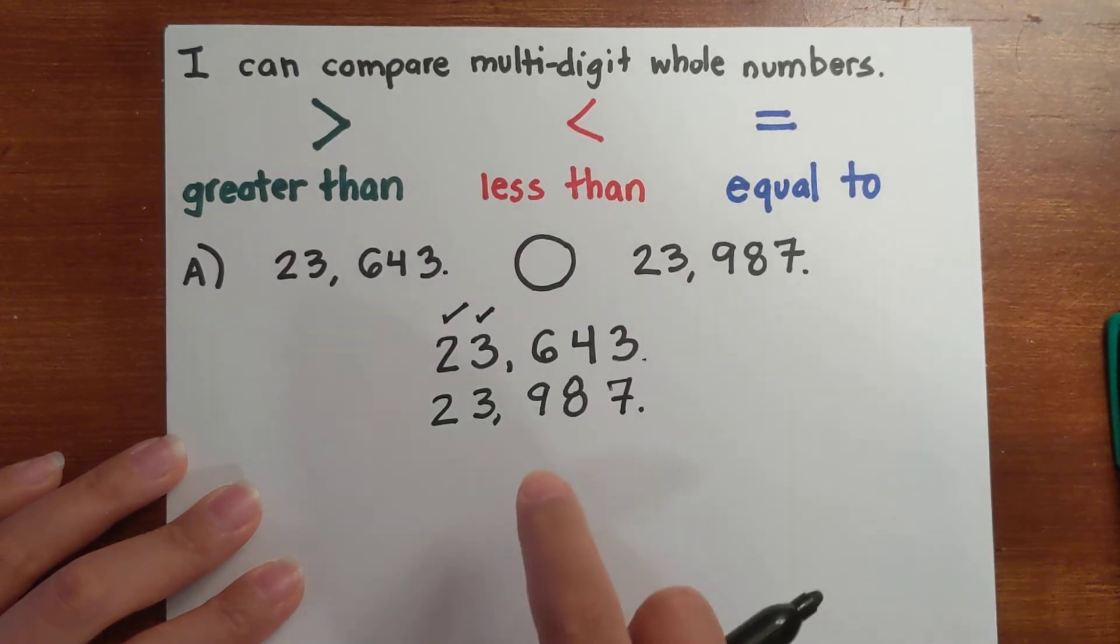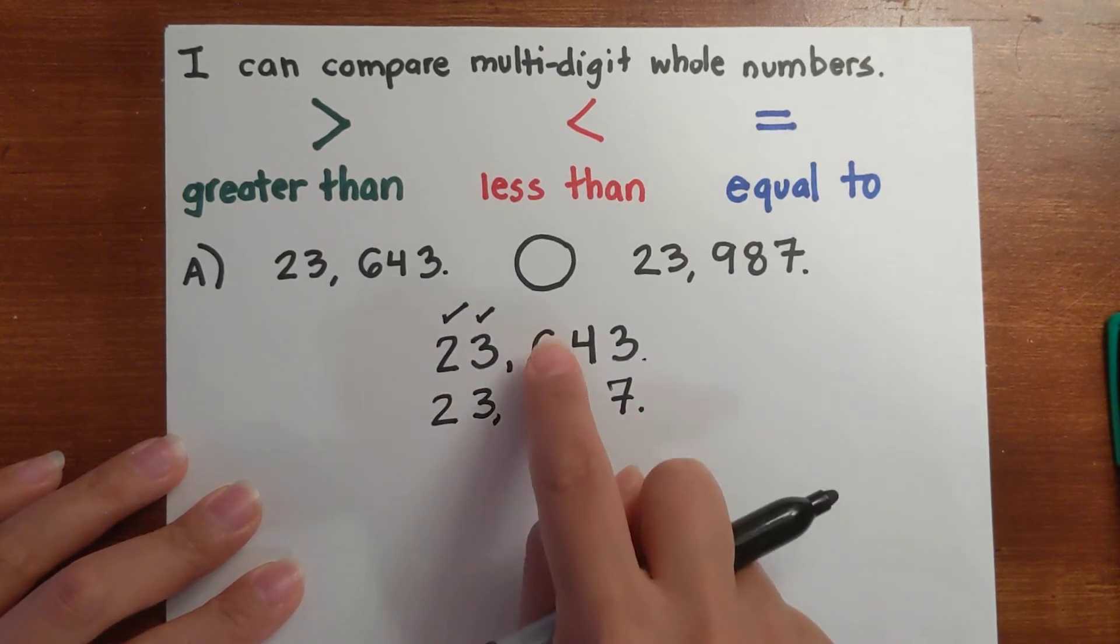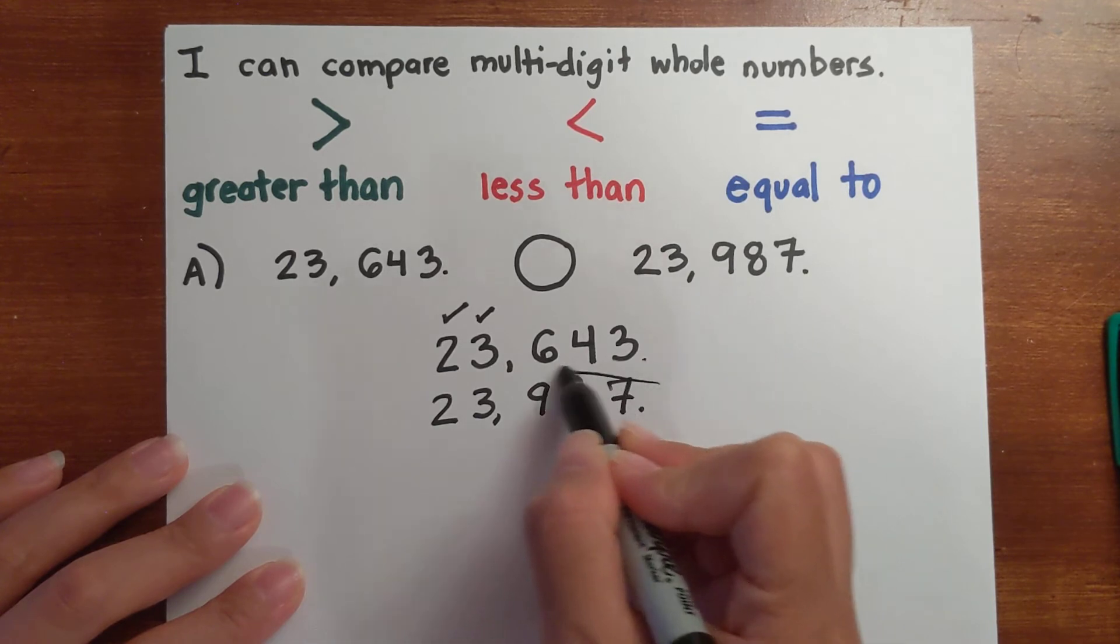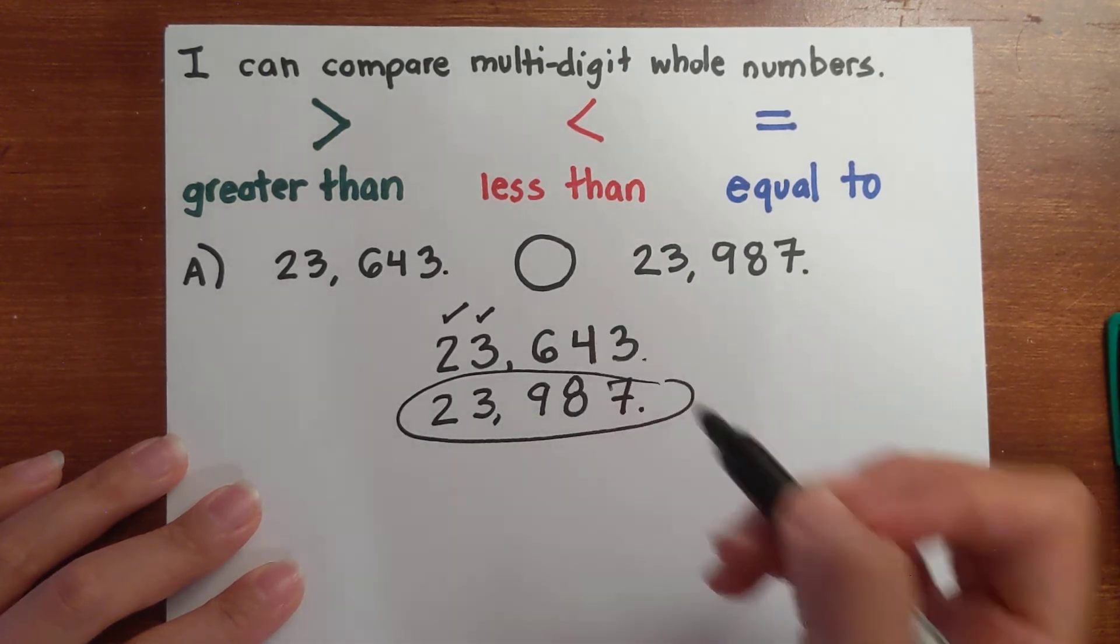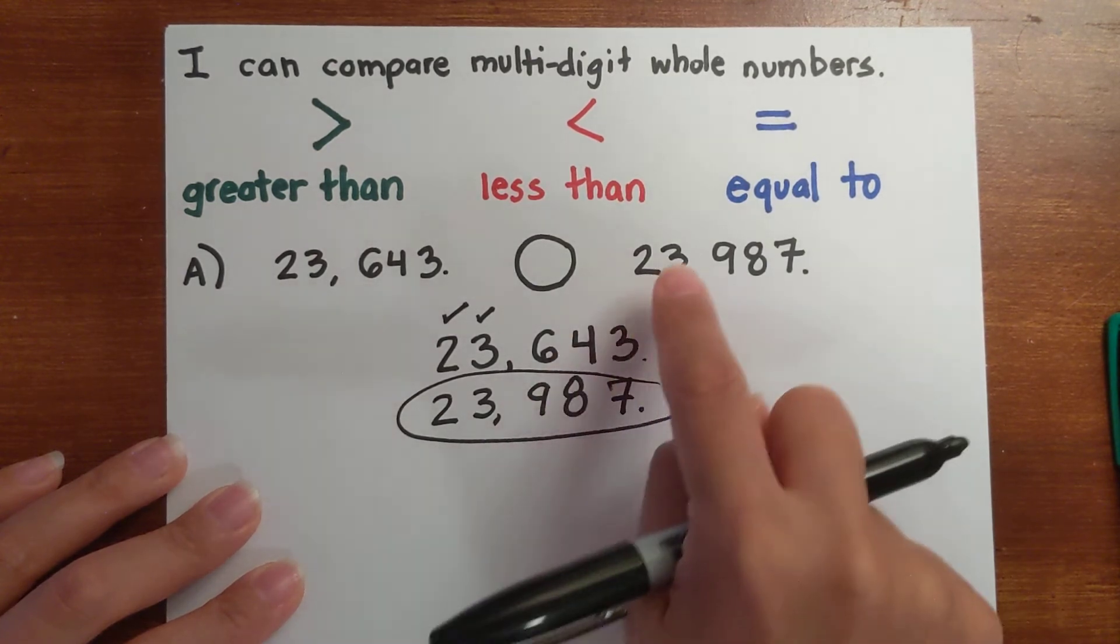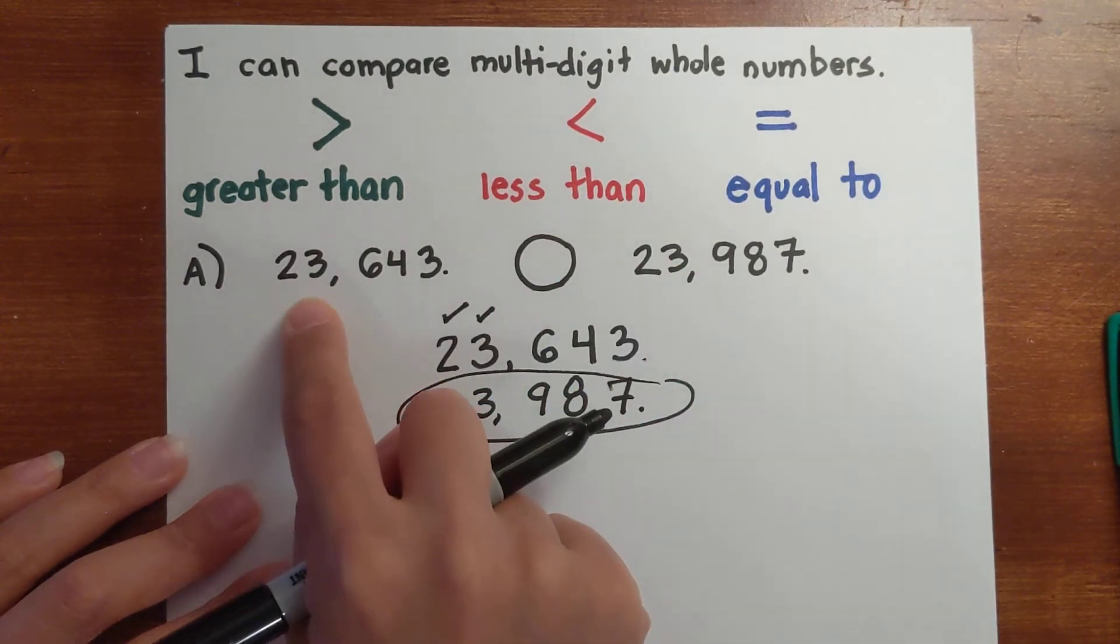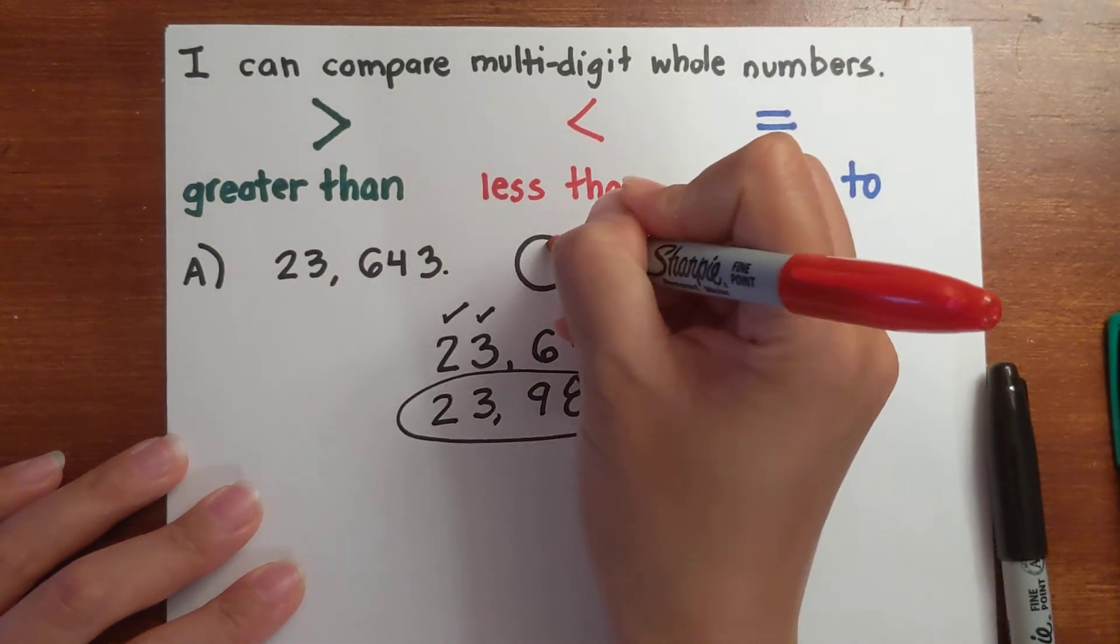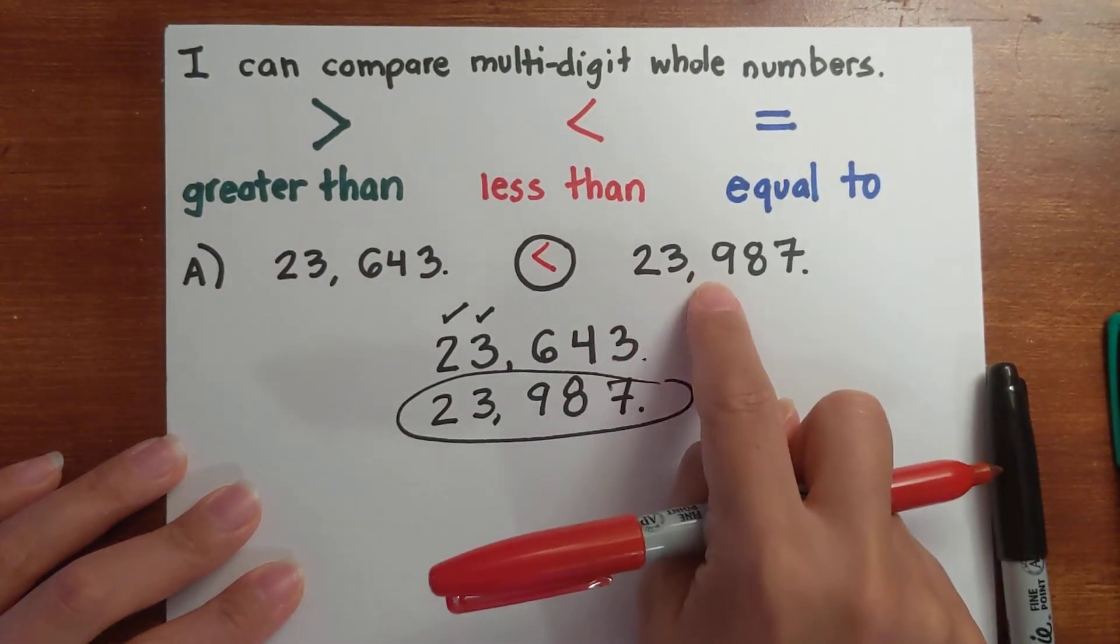Now let's look at the hundreds place value. You have 600 and 900. I know that nine is greater than six, so I can automatically say that nine is greater than six. So 23,987 is greater than 23,643. So 23,643 is less than 23,987.